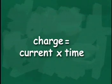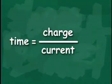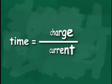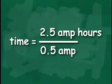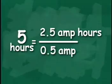To calculate the amount of time needed to charge the batteries, we use the following equation: Charge is equal to current times time. Since we want to know the length of time needed to charge the batteries, we can rewrite the equation as time is equal to charge divided by current. The Icarus satellite batteries have a maximum charge capacity of 2.5 amp hours, and a typical charging current is 0.5 amps. So if the charge is 2.5 amp hours and the current is 0.5 amps, time equals 2.5 amp hours divided by 0.5 amps, giving us a time of 5 hours to reach full charge.